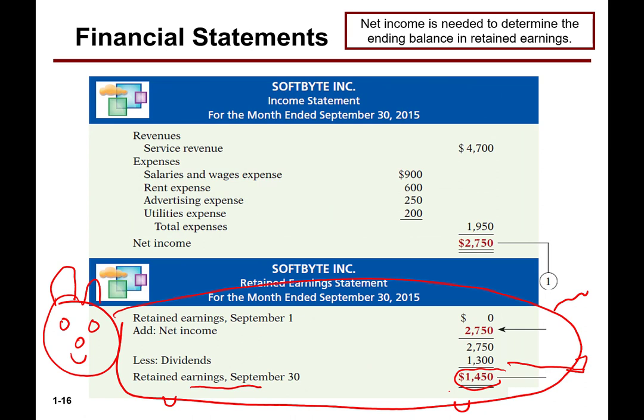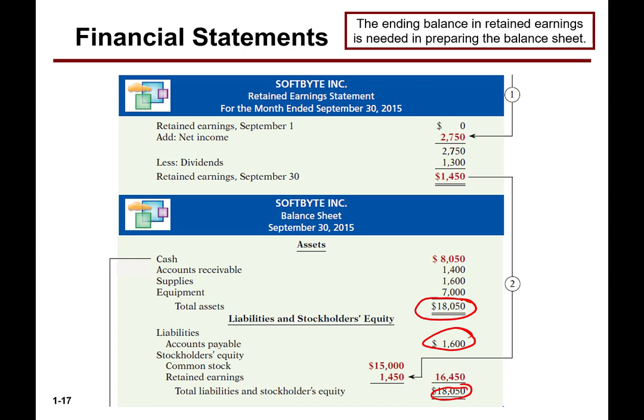Revenue minus expenses is net income — that's what you report on the income statement. I take my net income and put it in my retained earnings, my piggy bank. Every now and then I pull some money out — if I pull money out, I haven't retained it, so I subtract it from whatever I put in. And then I have a balance sheet — they call it a balance sheet because it balances.